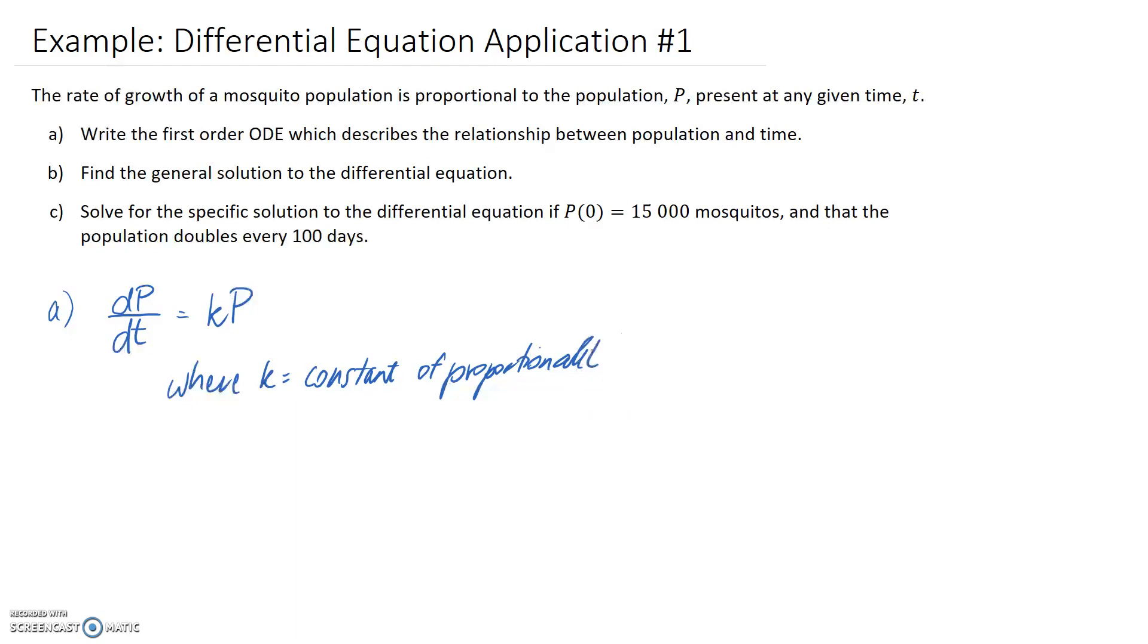If k was one, the rate would be directly equal to the population. But it's factored down or potentially up by some amount. In the context of this question, since we're talking about growth rates, you can think of k as the constant of proportionality for population growth.